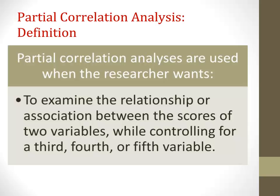When a researcher wants to examine the relationship or association between the scores of two variables while controlling for a third, fourth, or fifth variable, the researcher would conduct a partial correlation. This technique is sometimes commonly used for modeling of small models, such as three to five variables. If you are using over three to five variables, then often the best choice is to start examining a multivariate correlation analysis, such as a multiple regression or multiple correlation analysis.